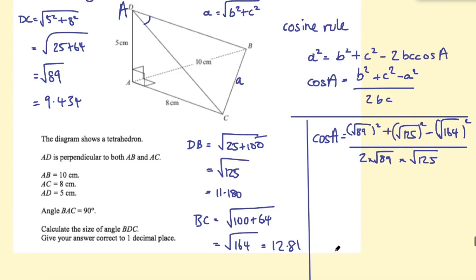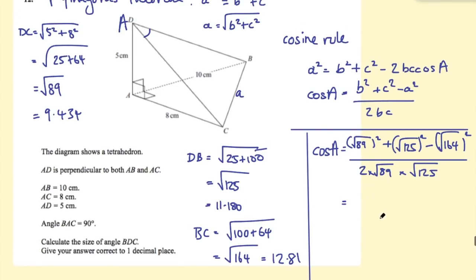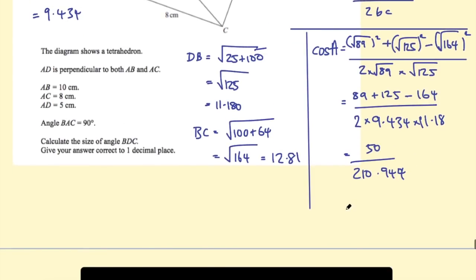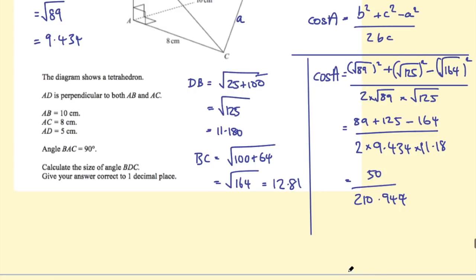Okay so we've plugged everything in to the formula, we just need to go ahead and solve this side of it now. So the square of the square roots is just the numbers so on the top line we've just got 89 plus 125 minus 164. On the bottom line we'll need these decimal approximations so 2 times 9.434 times 11.18. So on the top line that evaluates to 50 and on the bottom line we get about 210.944. And then if we put that into a calculator we get 0.23703.